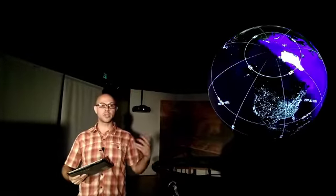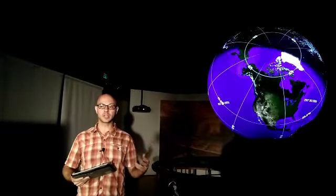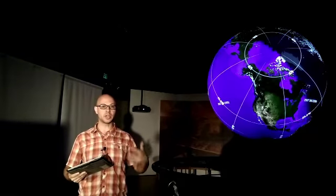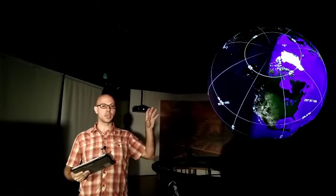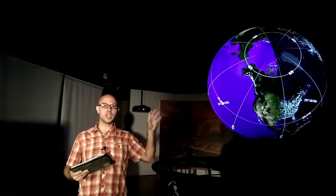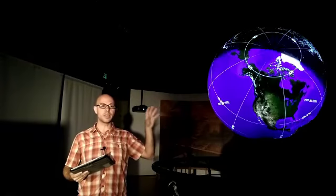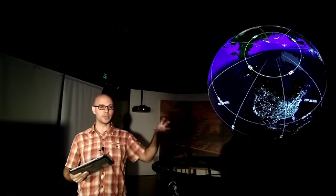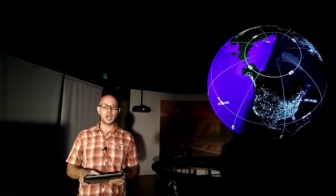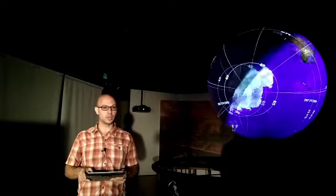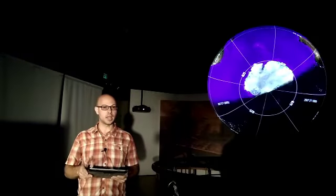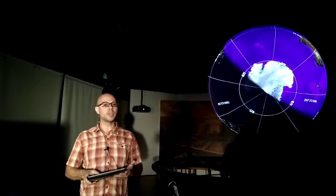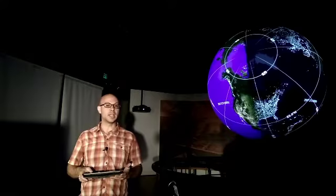Due to the Earth's 23 degree tilt as it orbits around the sun, the northern and southern hemispheres of the Earth experience varying amounts of daylight. Here we're looking at the Earth during the fall equinox, and at this time the northern hemisphere and the southern hemisphere experience roughly equal amounts of daylight.